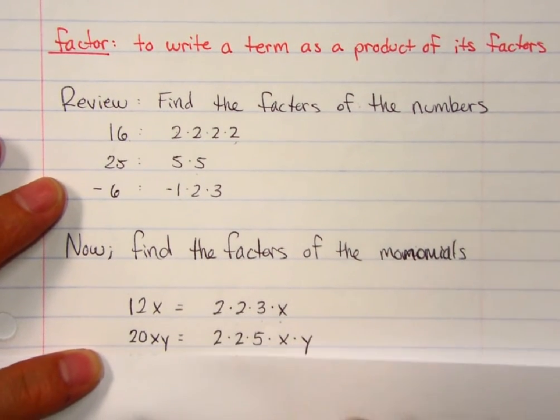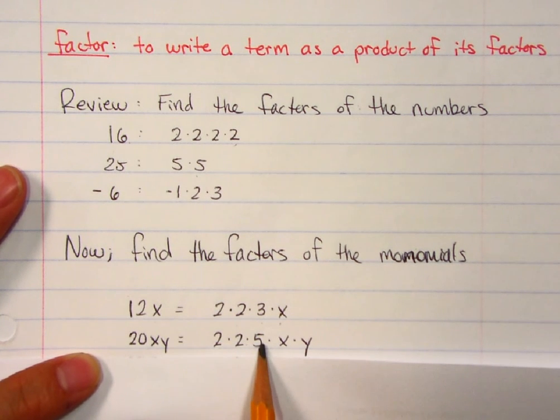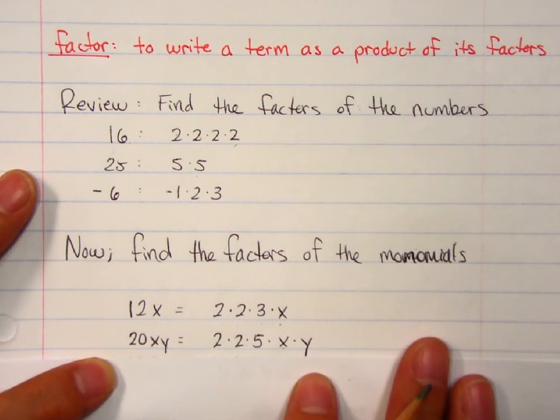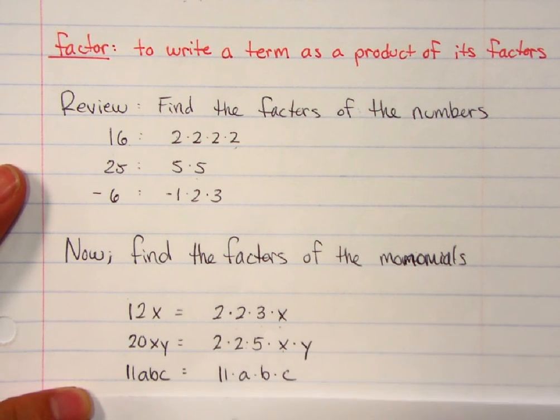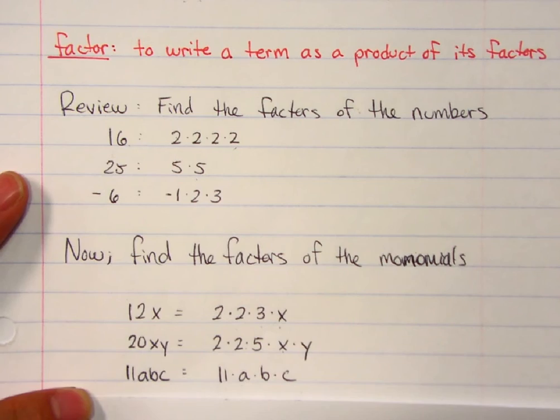Take a look at this one, 20xy. Well, the 20 part, the number, coefficient if you will, is made up of 2 times 2 times 5. Those are the prime factors. There's x, y, that's just an x and a y. Those are all multiplied together to make that one here. Last one here, 11abc, 11, which is a prime number, can't break that up any further, a times b times c. Okay, so that's how you factor a monomial, just like that.